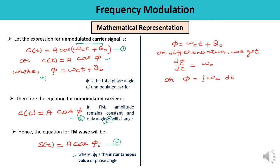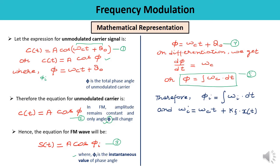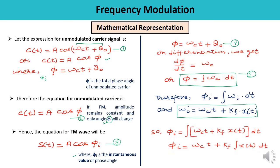Differentiating phi = omega_c * t + theta_0 with respect to time gives d(phi)/dt = omega_c. The instantaneous phase angle phi_i = integral of omega_i dt, and since omega_i = omega_c + kf * x(t), substituting gives: phi_i = omega_c * t + kf * integral of x(t) dt. Here kf is the frequency sensitivity of the modulator, a very important parameter.